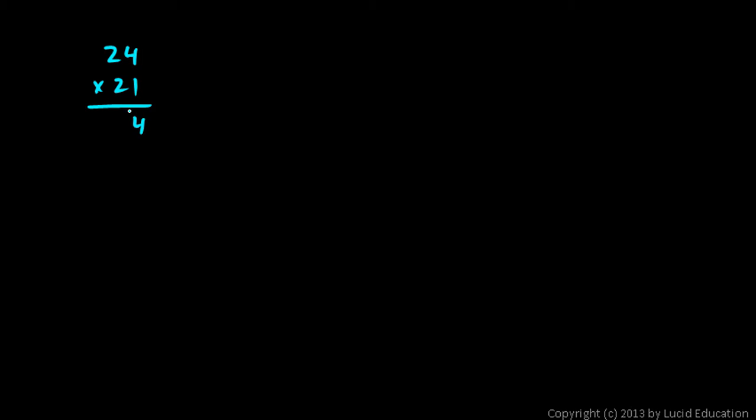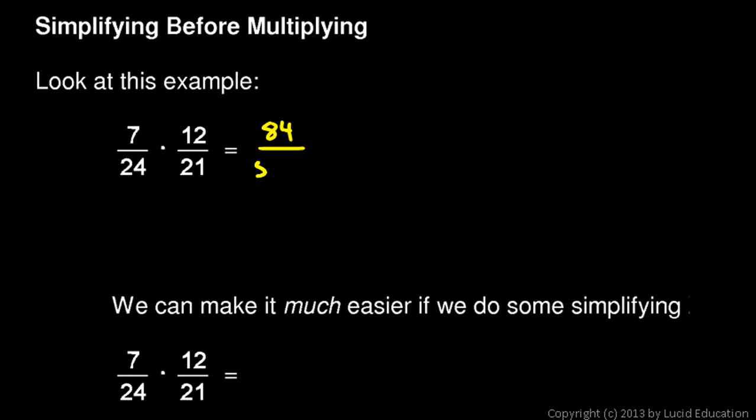24 times 21. Let's see, 1 times 4 is 4, 1 times 2 is 2, put a 0, 2 times 4 is 8, and 2 times 2 is 4, and we add this up. Carry the 1. 504. 24 times 21 is 504. So that's my denominator.